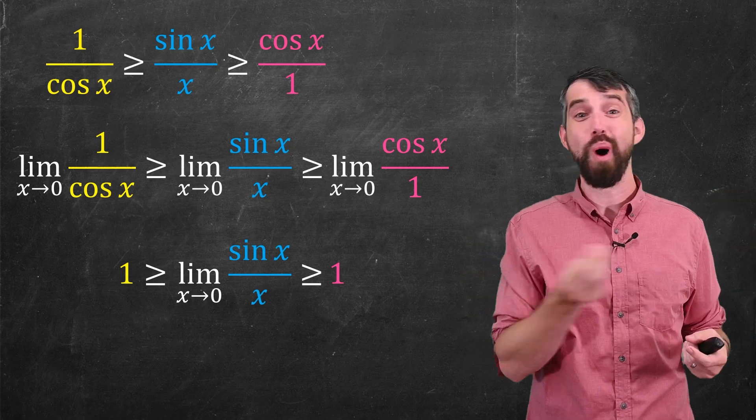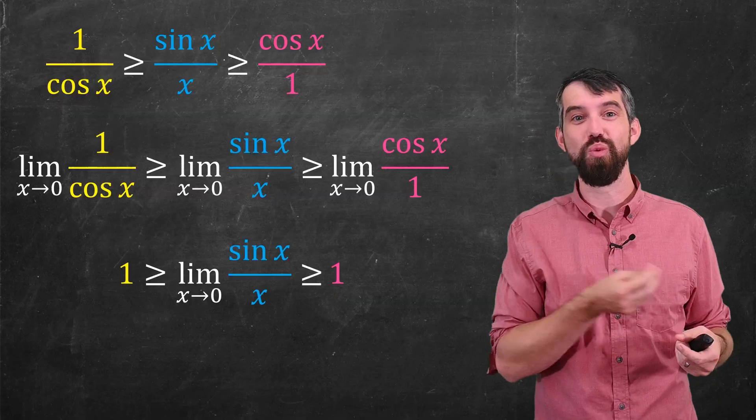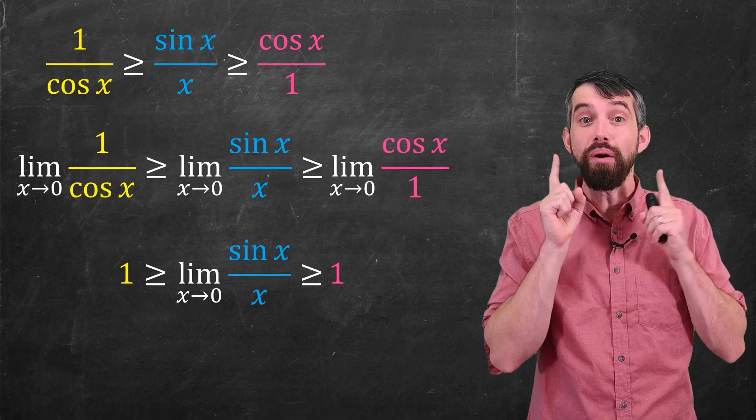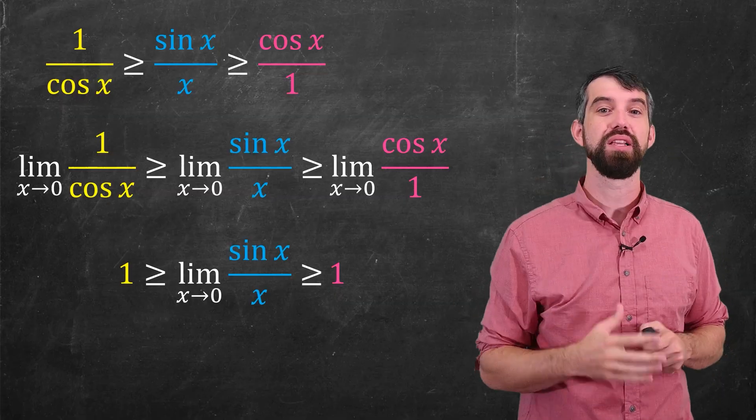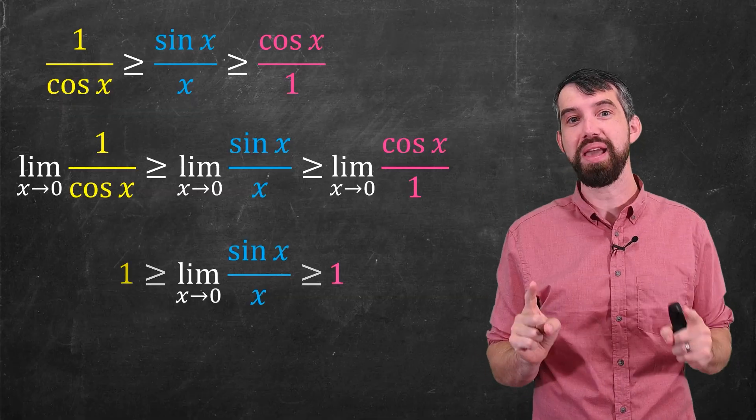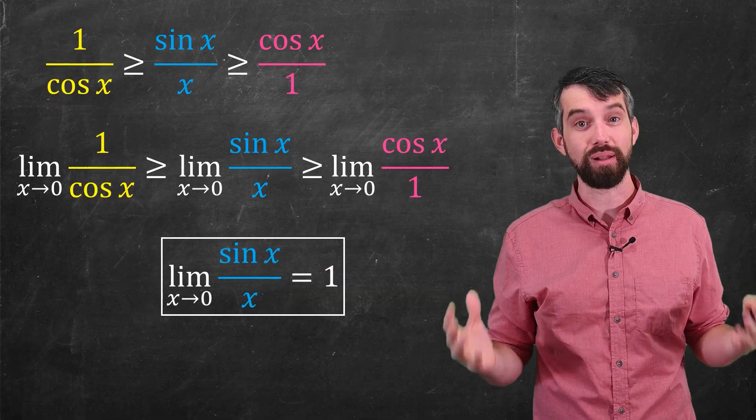And if you're just sandwiched between 1 and 1, if you're both bigger than or equal to 1 and smaller than or equal to 1, you are equal to 1. And thus, the limit as x goes to 0 of sine of x divided by x is equal to 1. We've proven our claim.